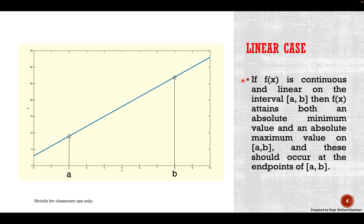For the linear case, if f of x is a continuous function and linear on the closed interval a b, then f of x attains both an absolute minimum value and an absolute maximum value on the interval a b, and this should occur at the endpoints of the interval.